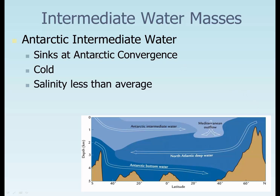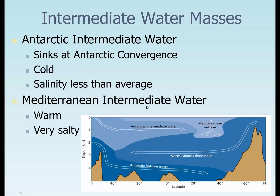Antarctic intermediate water sinks at the Antarctic convergence — it is cold, but it's less salty than average, so it's less dense and it sits up above all the rest. The Mediterranean intermediate water is relatively warm, but really salty because of evaporation, so it is dense and will sink down — but it sinks until it finds water that is more dense than it, and then it sits on top of that.